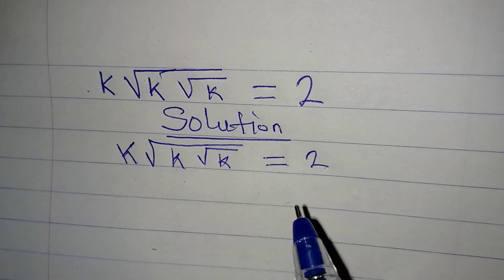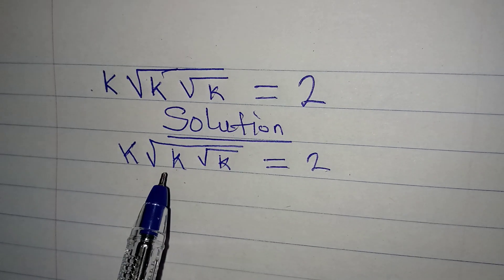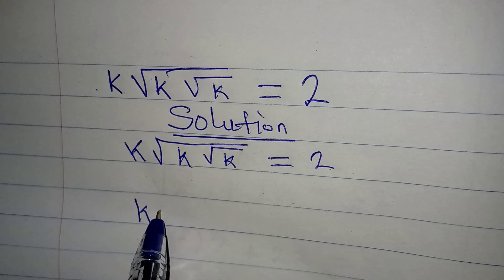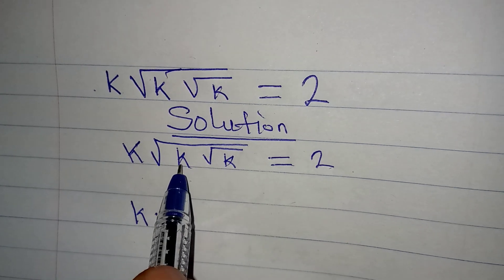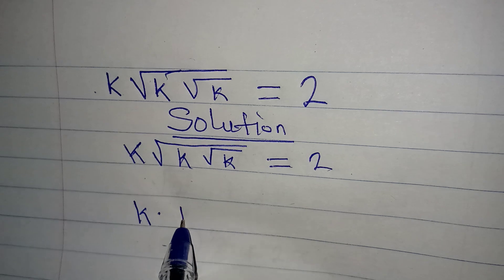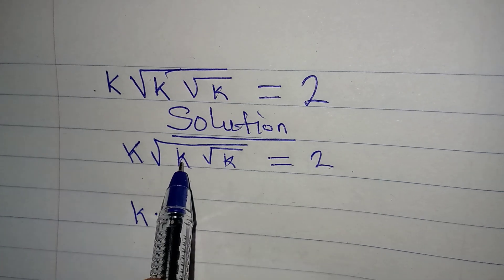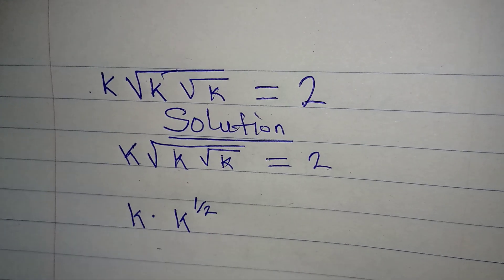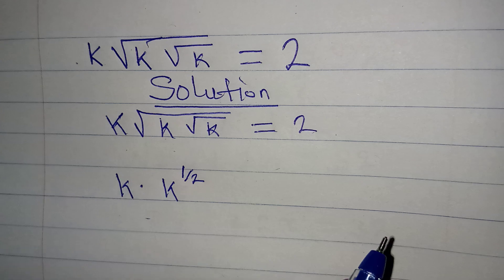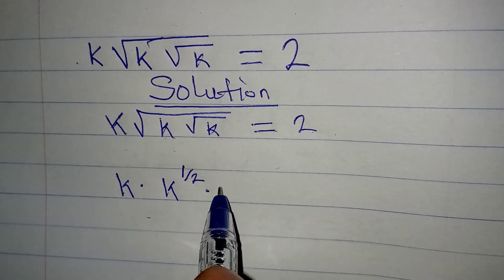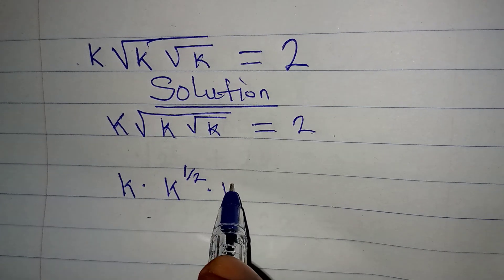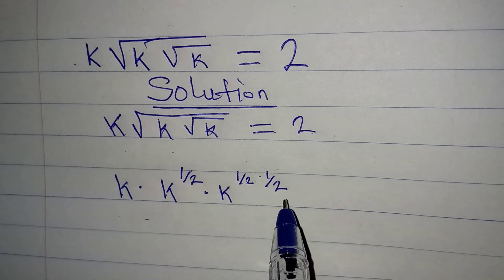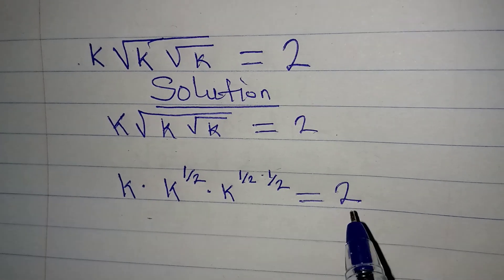The first thing we do is rewrite it. We have k multiplied by — the second k is under one square root, so we have 1/2 as its power. Then the second one is under a second square root sign, so we write k to the power of 1/2 times 1/2. The whole expression is equal to 2.